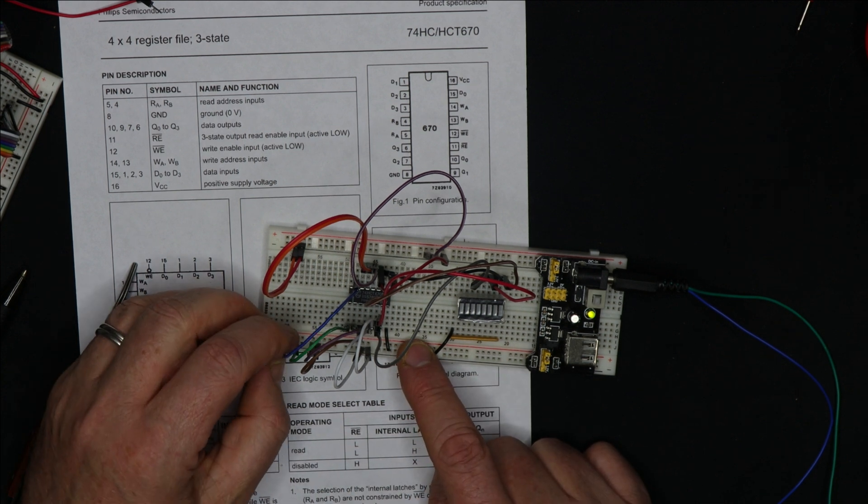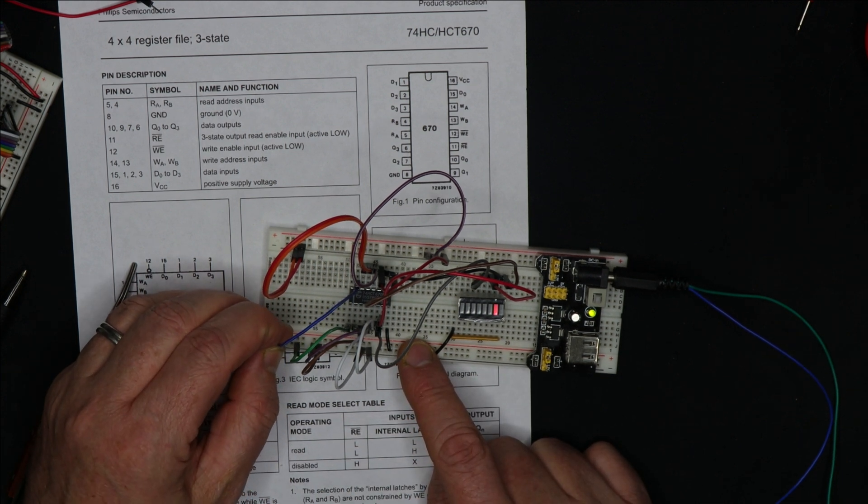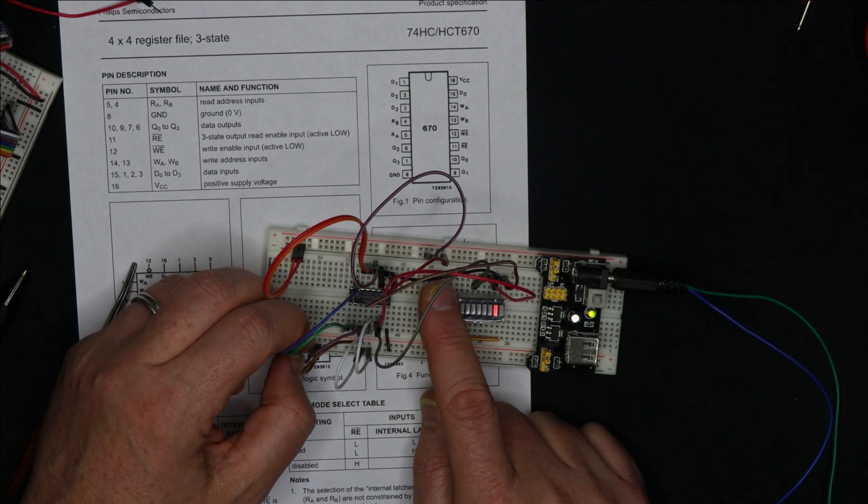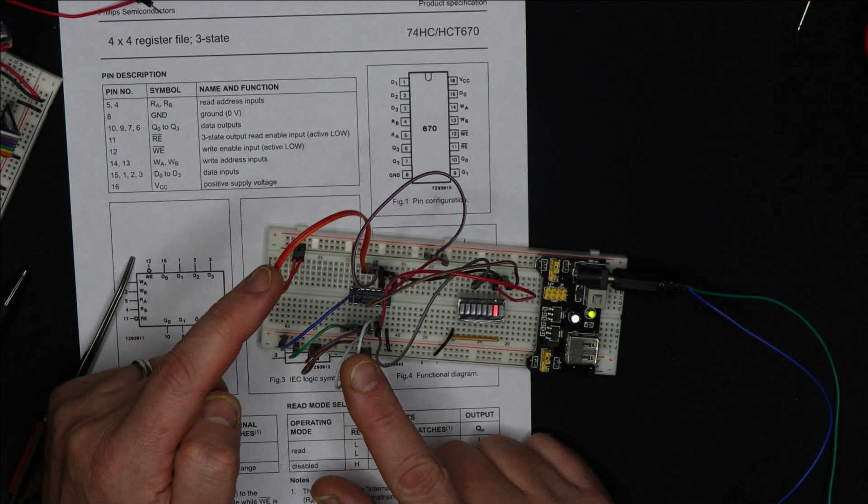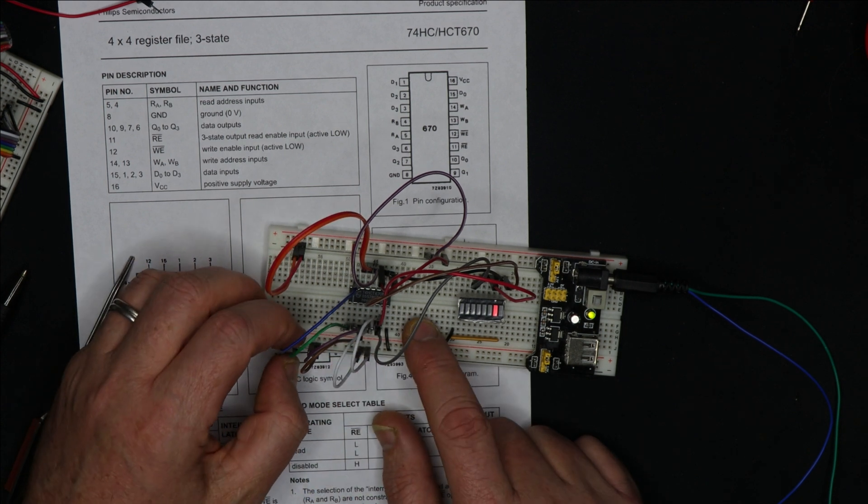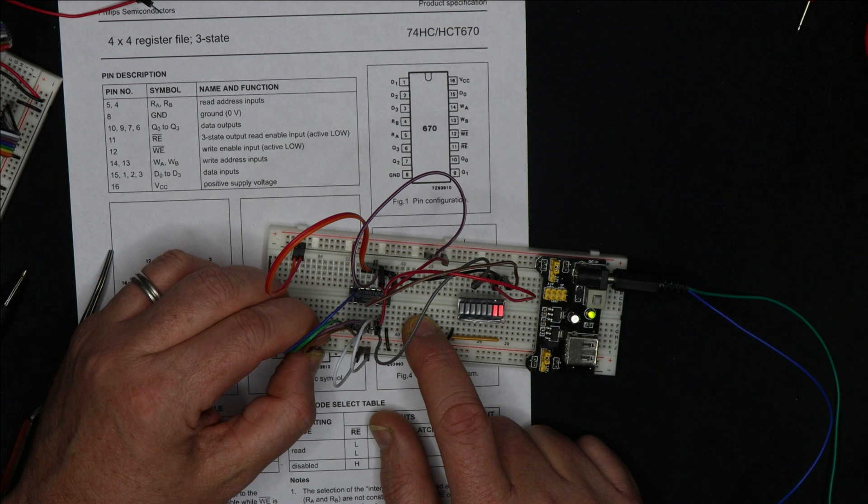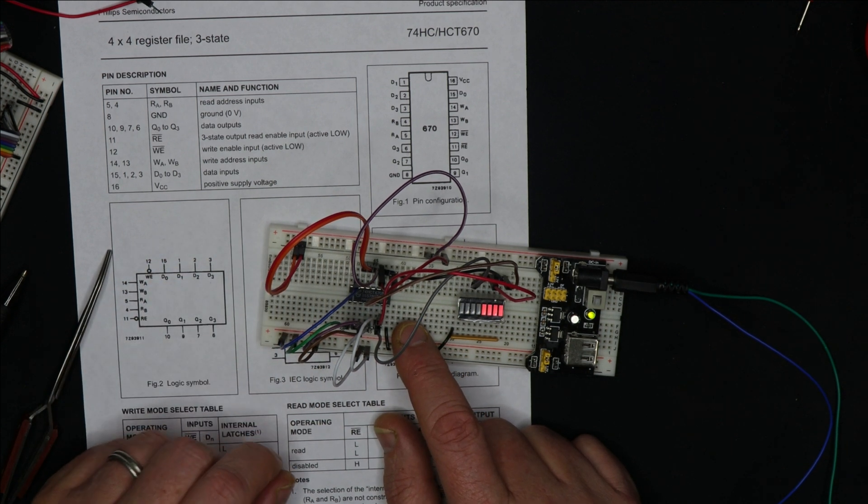Nothing lights up. If I bring a bit high, then that bit comes on. So because read and write are both enabled and I'm addressing the same register for read and write, then it's in a transparent latch mode. So if I bring them all high, you can see they will light up.